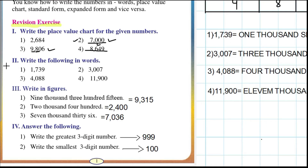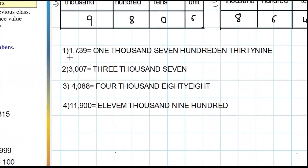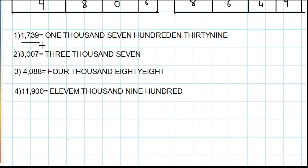Next main: write the following in words. Here they have given numbers and we have to write them in words. First question: 1739 — one thousand seven hundred and thirty-nine.